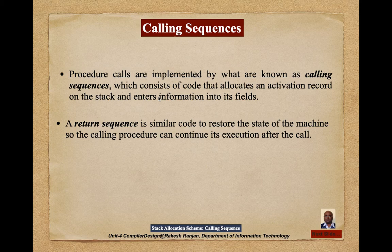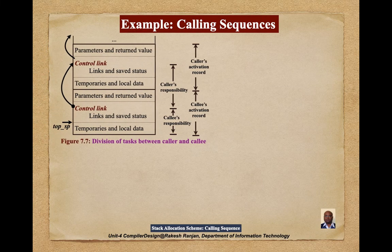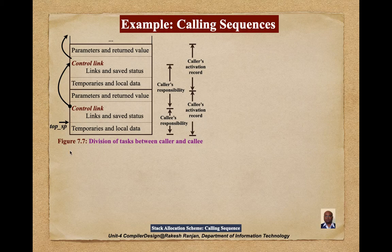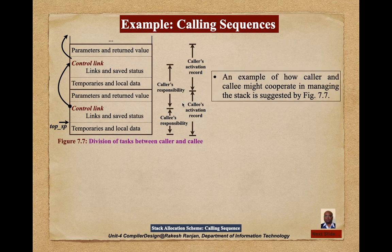Here we will learn how the sequence of calling of a procedure is used. This example shows the division of tasks between caller and callee. How the caller and callee might cooperate in managing the stack is suggested in figure 7.7. Here we have the caller controlling temporarily: local data, parameters, and return value.